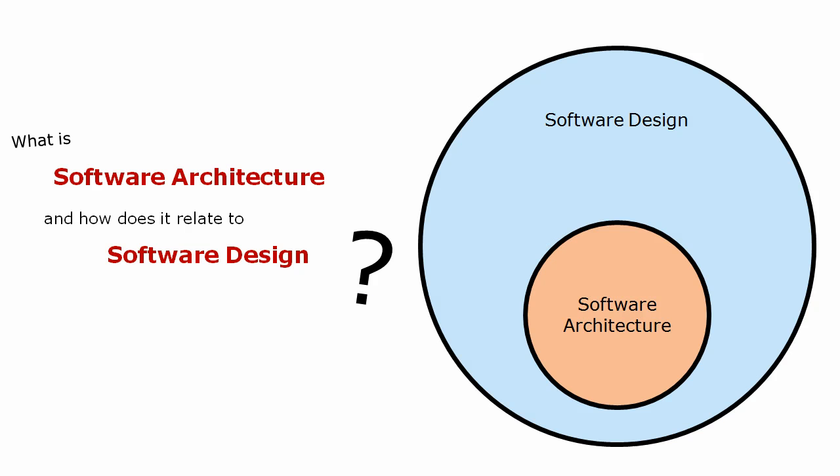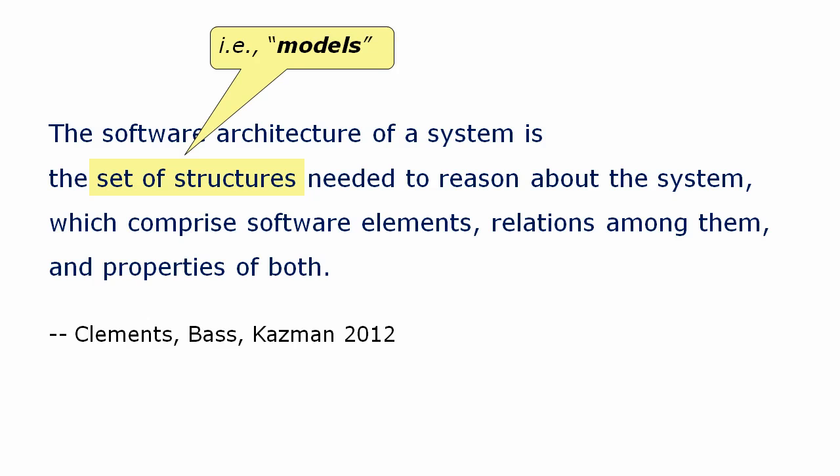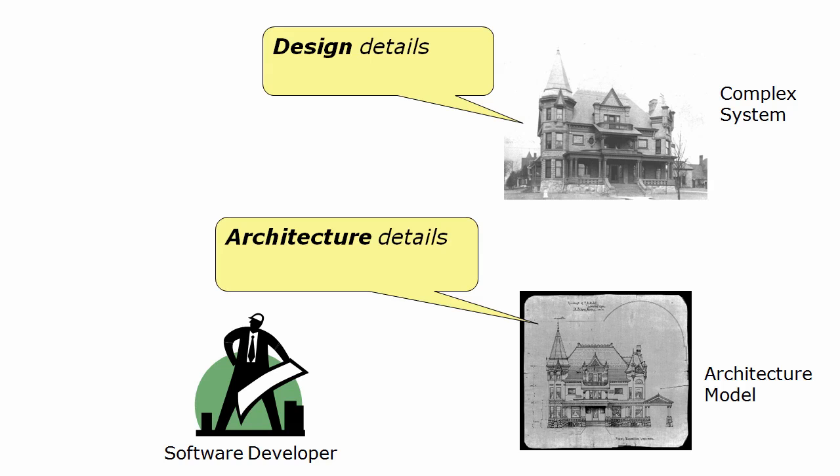Now let's return to the question: what is software architecture and how does it relate to design? Here's the definition of software architecture again, and this time it should make a lot more sense. The software architecture of a system is a set of structures needed to reason about the system, which comprise software elements, relations among them, and properties of both. 'Set of structures' here just means models — models that you use to reason about the system. When you build models to reason through your risks, you are excluding design details irrelevant to the risks you identified, and including architectural details essential to understanding your system's success.